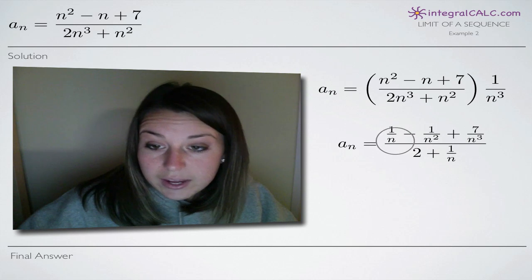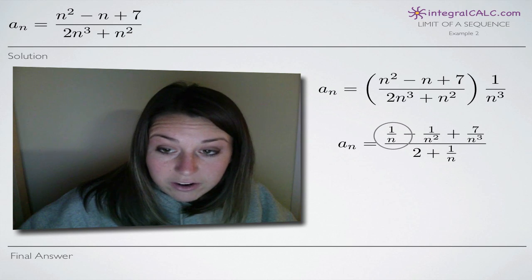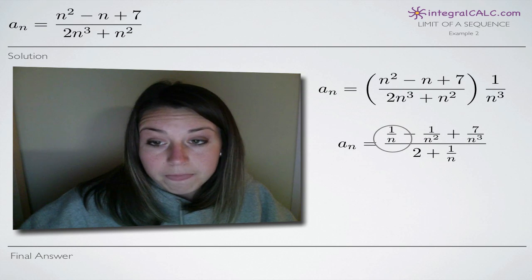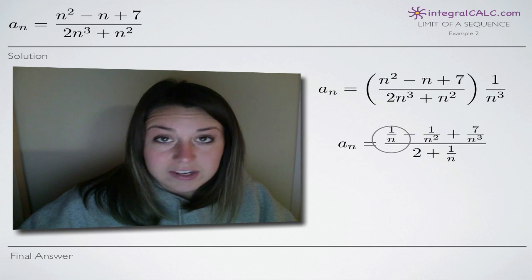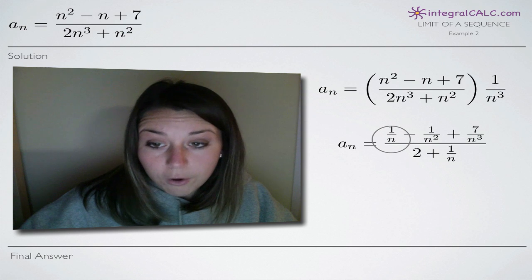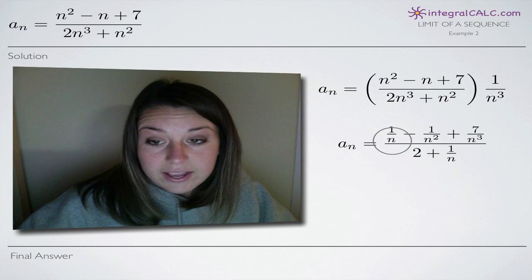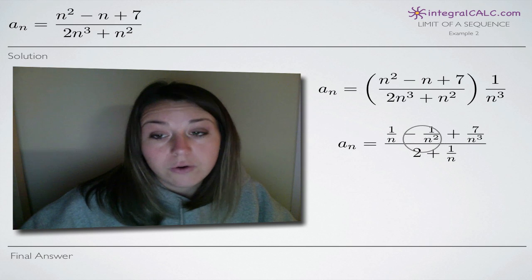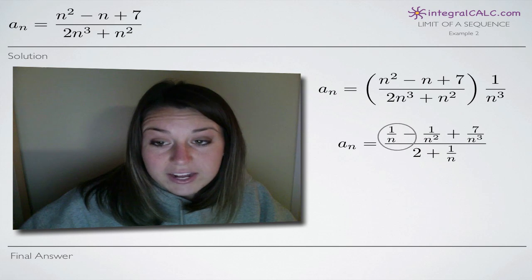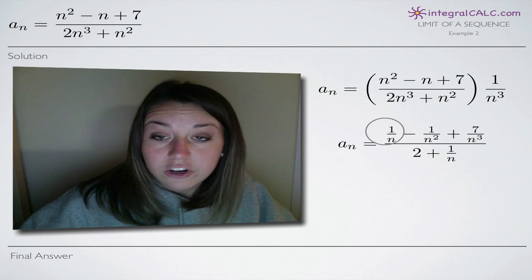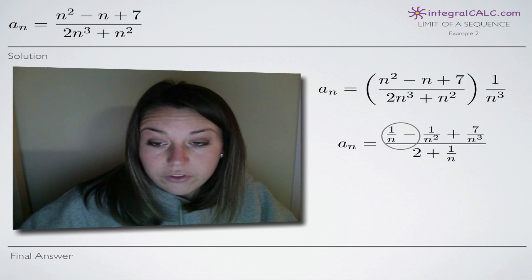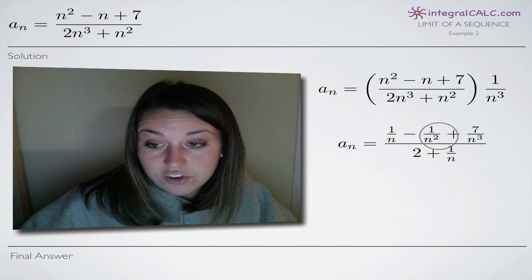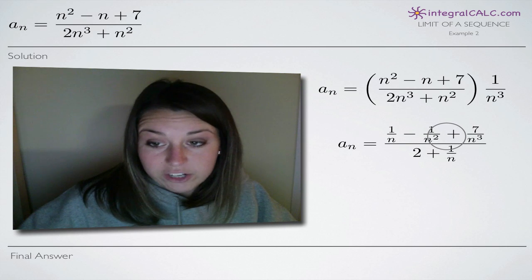If we get n into the denominator of every term, whenever we plug in infinity, that term, if n is in the denominator, is going to approach 0. 1 divided by infinity is 0. 1 divided by infinity squared is going to be 0. Whenever we have infinity in the denominator, that term is going to approach 0. So that'll mean that we will have a much easier time simplifying this fraction.